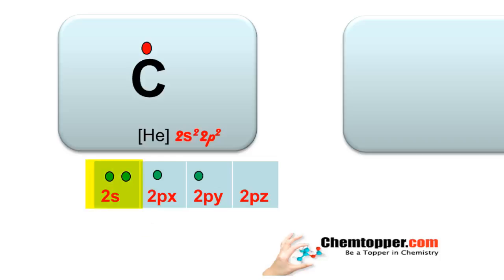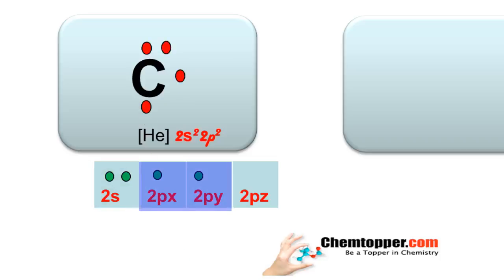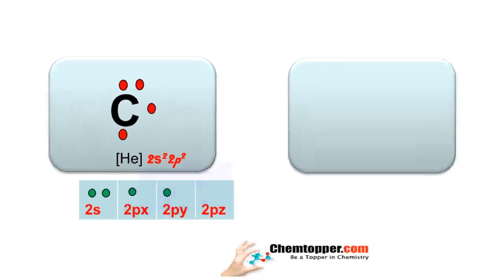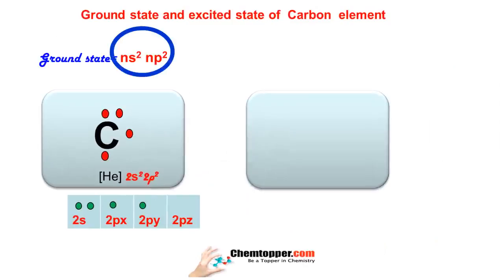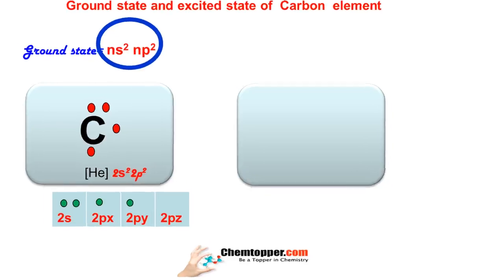We represent the two 2s electrons as a pair and the p electrons as single electrons around the symbol of carbon. That is the ground state electronic configuration of all group 4A elements, and they can all be represented the way we have done for carbon in their ground state.